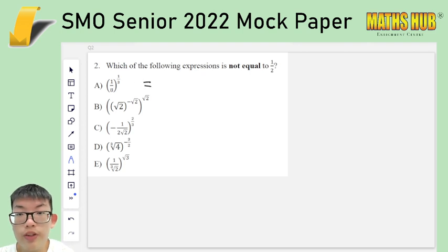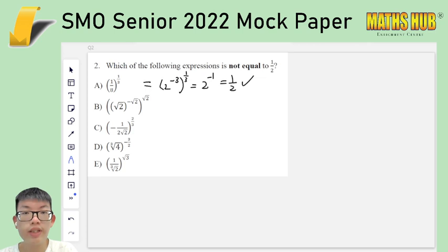Meaning that most of them should be equal to 1 half. And our focus will be trying to make it into 2 to the power of negative 1. So for the first one, 1 eighth is 2 to the negative 3 to the 1 third, which is indeed 2 to the negative 1. So this is half. So for B, you can combine together the two exponents and multiply them together. So you will get square root of 2 to the power of negative 2. And square root of 2 squared is 2, so you get 2 to the negative 1. Again, this is correct.